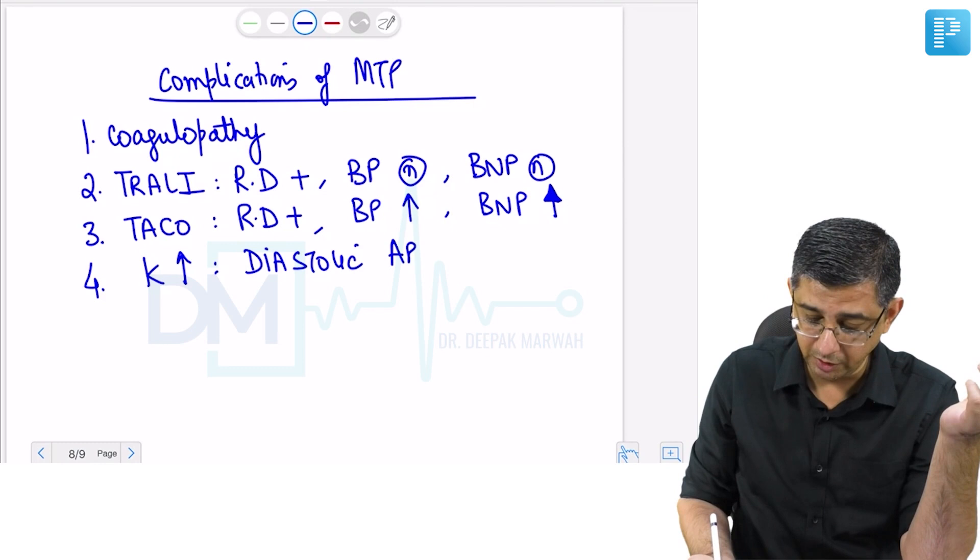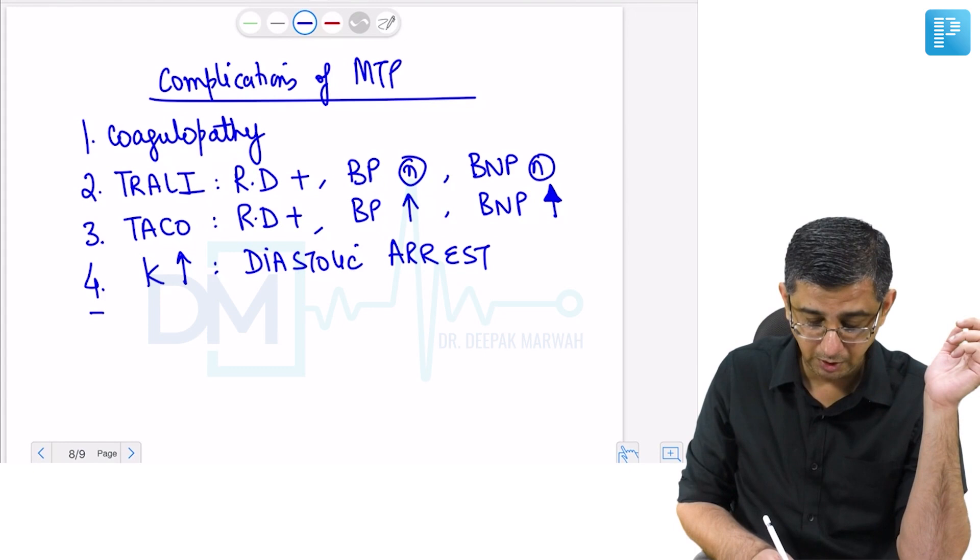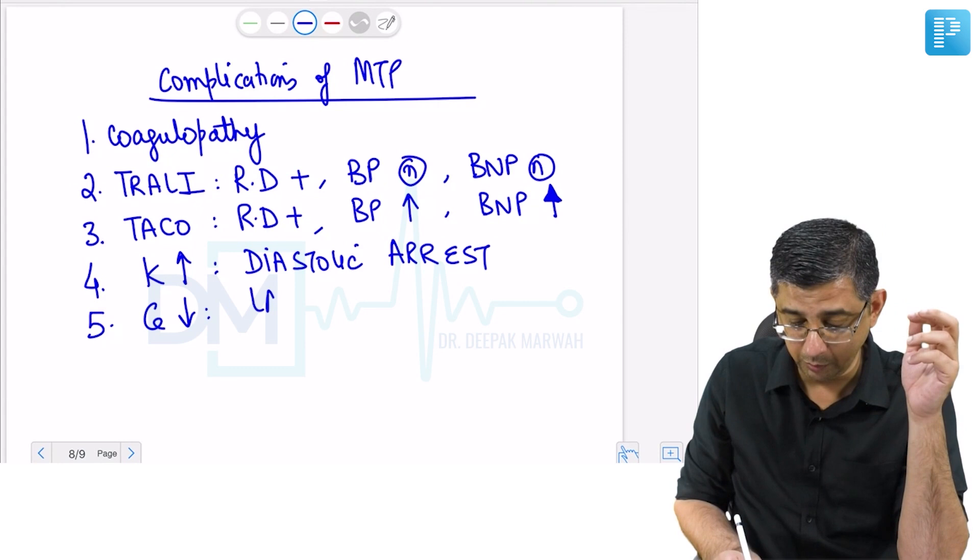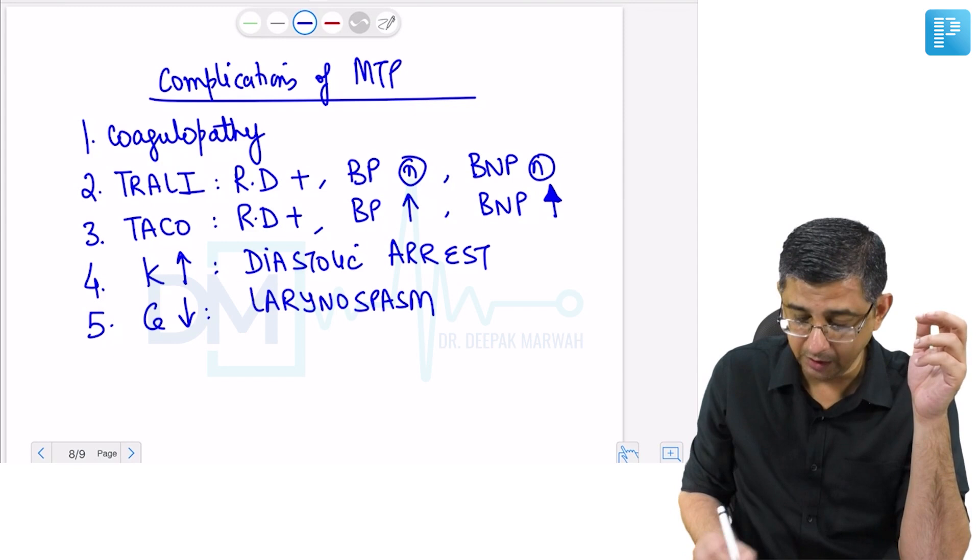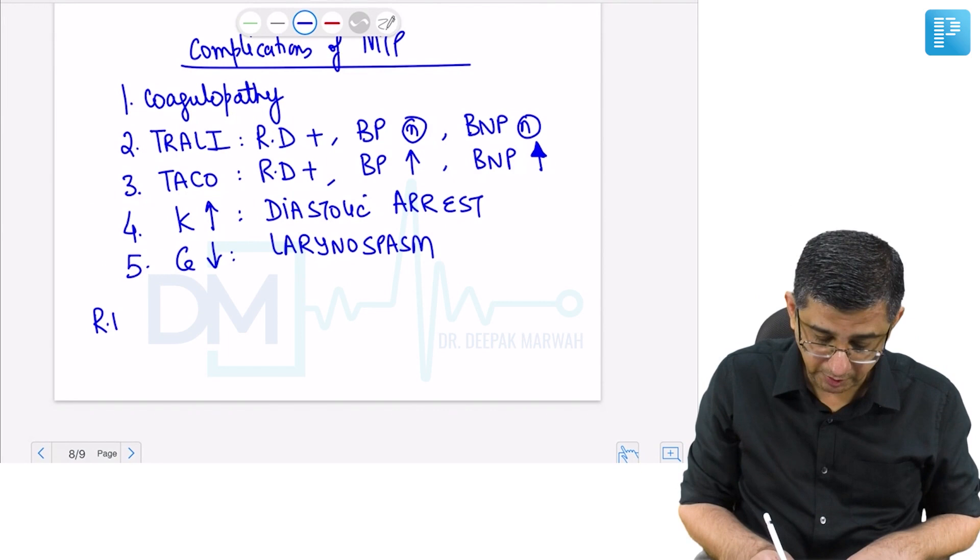Hyperkalemia can contribute to diastolic arrest. If after blood transfusion there is bradycardia, it is hyperkalemia. On the other hand, if a person after massive blood transfusion has difficulty breathing with development of stridor but the chest is clear, then it could be tetany. I'll highlight the facts once again.